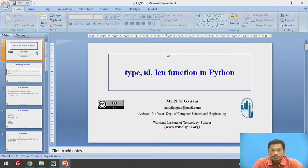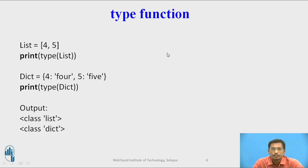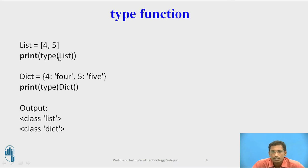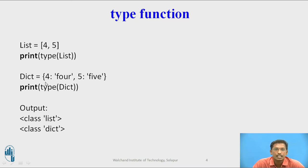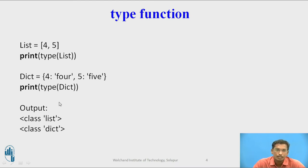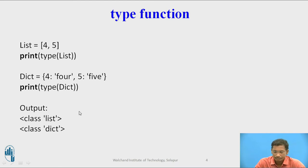Here is a slide example for the type function. We have list equal to [4, 5] and print type of list — it will print class list. Next, a dictionary with key-value pair 4:4 and 5:5. If you print type of the dictionary dict, it will print class dict. So the type function is used to print the type of an object.